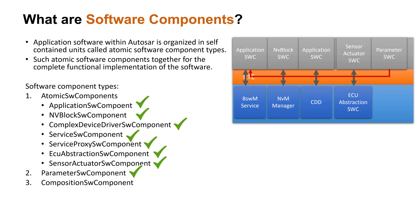A parameter software component is used to provide calibrations for a project. These calibration parameters provided from this component can be used in all other software components. This software component is a bit special compared to other components with a few unique rules. The parameter software component cannot have a C file associated with it — it is only a configuration. Hence, this component cannot have a functional implementation or contribute functionally to the project.